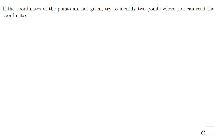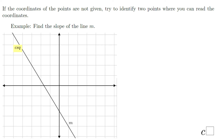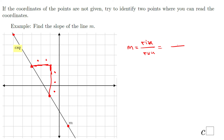If the coordinates of the points are not given, you want to identify two points from the graph. In this example, there are no given points, so look at the line and find good points — there are multiple choices and it doesn't matter which you choose. Drawing the slope triangle and counting: the rise is 1, 2, 3 and the run is 1, 2. The line goes down from left to right, so m equals negative 3 over 2. You can use any other two points and you will get the same value.